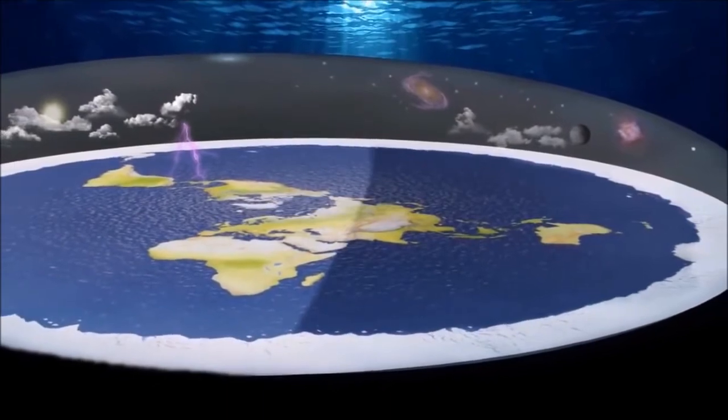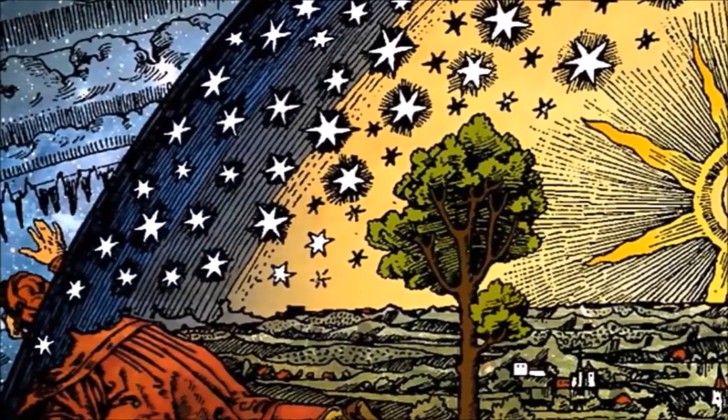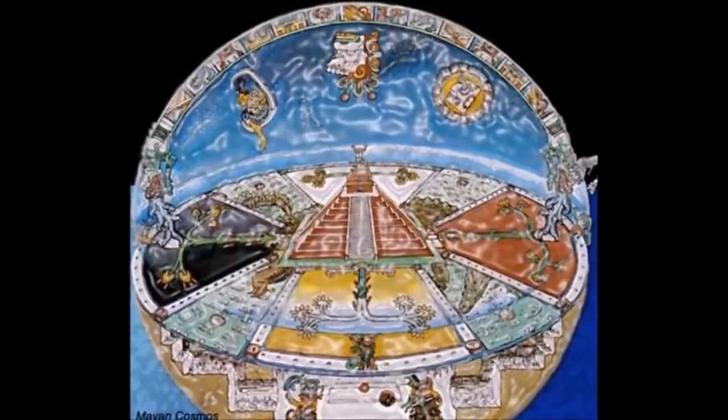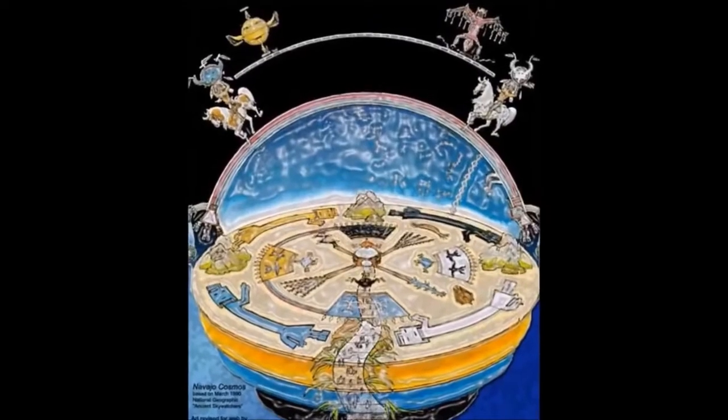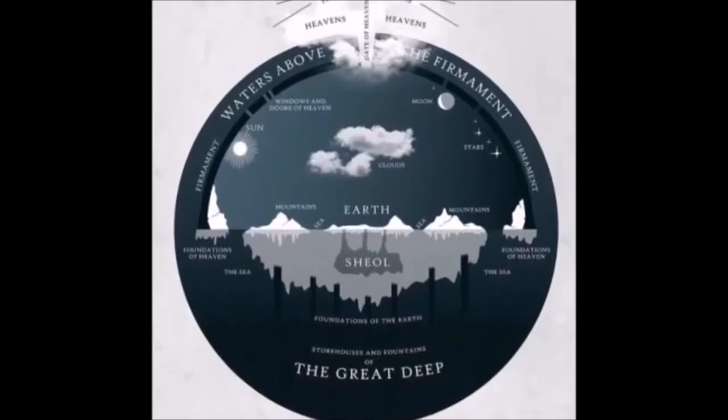No one is entirely certain if there is a dome or firmament above us. Many ancient cultures portrayed a dome above a flat geocentric Earth, and even the Bible speaks of a vaulted dome or firmament. There were military operations conducted in the mid-1950s, such as Operation Fishbowl, where the military shot rockets up into the sky and they exploded as if hitting a dome. Although this is compelling, it is foolish to accept the existence of a dome without evidence, so for now the idea remains unknown.